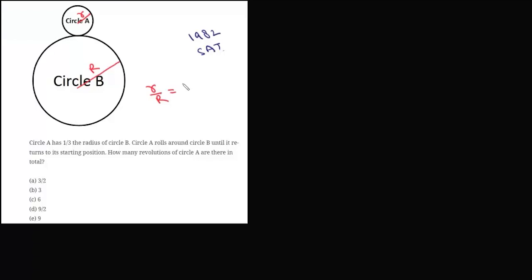Now the paper setter must have thought that when circle A rolls on circle B, in one rotation the distance covered by circle A will be equal to 2πr. Along circle B, the distance it needs to cover is 2πR. So in that case, the number of revolutions will be simply 2πR upon 2πr, which is R by r, and this value is 3.